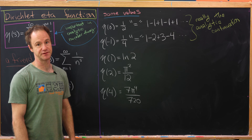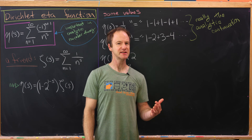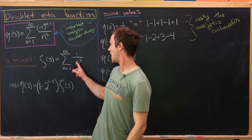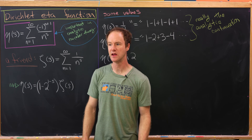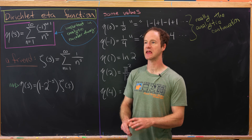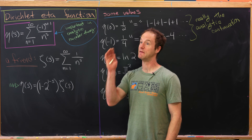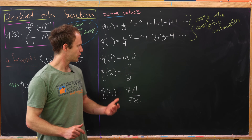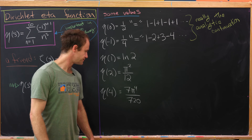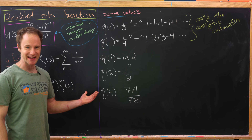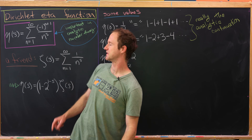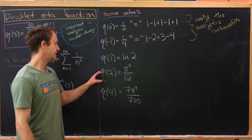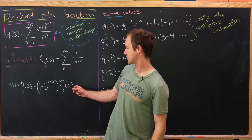Eta of 1 is the natural log of 2 — that's just the alternating harmonic series. This is how the eta function starts to differ from the zeta function. Recall that the zeta function does not converge when s is equal to 1; in fact, the only place it cannot be analytically continued is the vertical line in the complex plane where the real part of s equals 1. But that's fine for the eta function. We've also got eta of 2 and eta of 4, which are easily calculated from values of the zeta function.